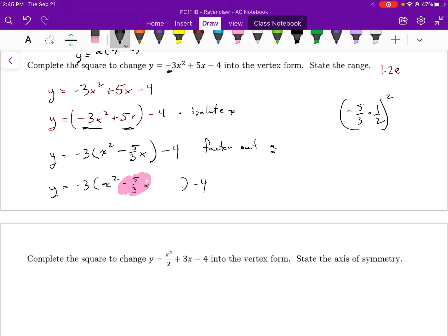So some people say you take that middle number, you divide it by 2, and you square it. And I say yes, you take that middle number, and you multiply it by 1 half, and you square it.